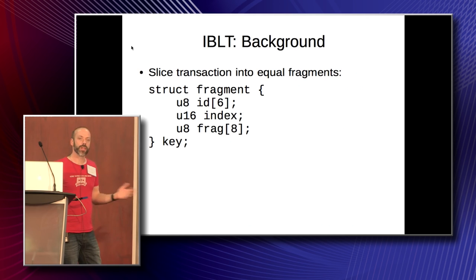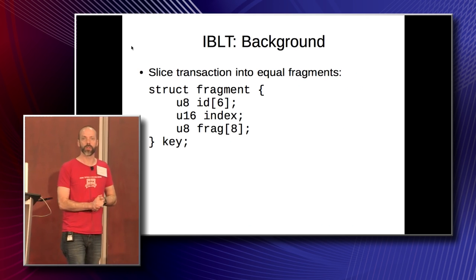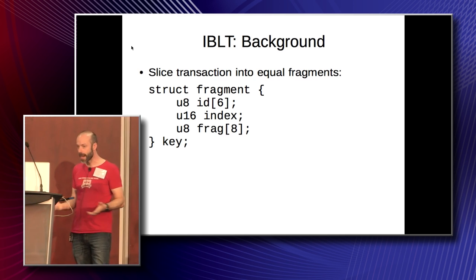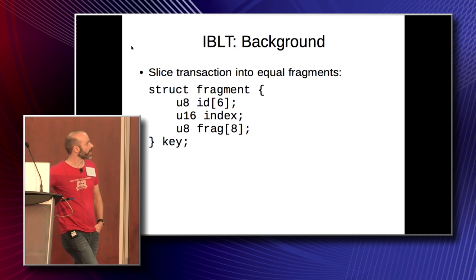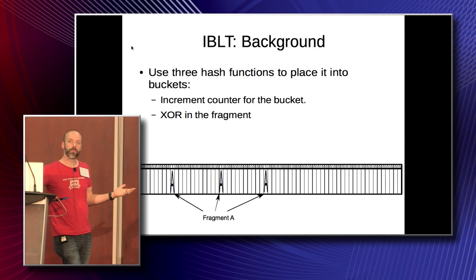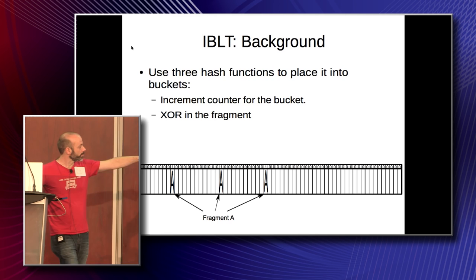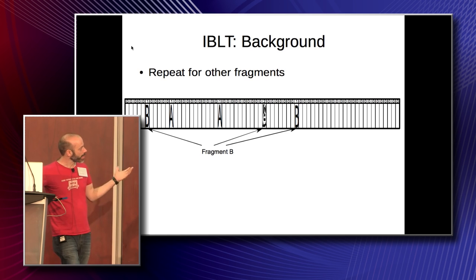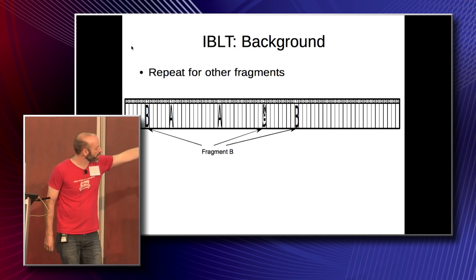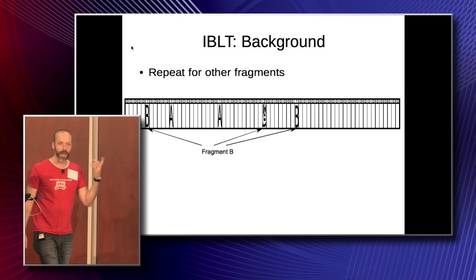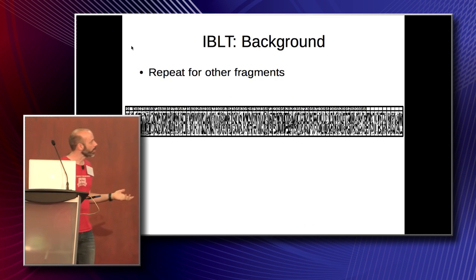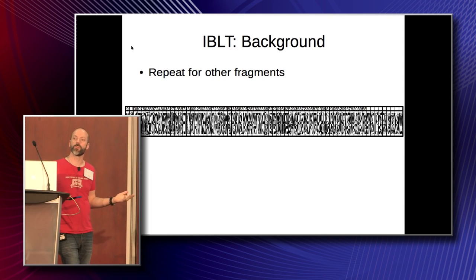Basically what you do is: IBLT deals with constant sizes, so you split your transaction into fragments that look something like this. They have a fragment ID, an index which is the number for the fragment, and then the actual data. Those familiar with bloom tables will know you take three hash functions and throw the fragment into your bloom filter. In this case we keep a counter as well as XORing in. We do the same thing with our second fragment — thanks to the wonders of SVG, the A and B are XORed over each other, and there's a two-counter on that bucket. We do that for all the fragments and end up with something that looks like an oversaturated bloom table, which is useless to everyone.